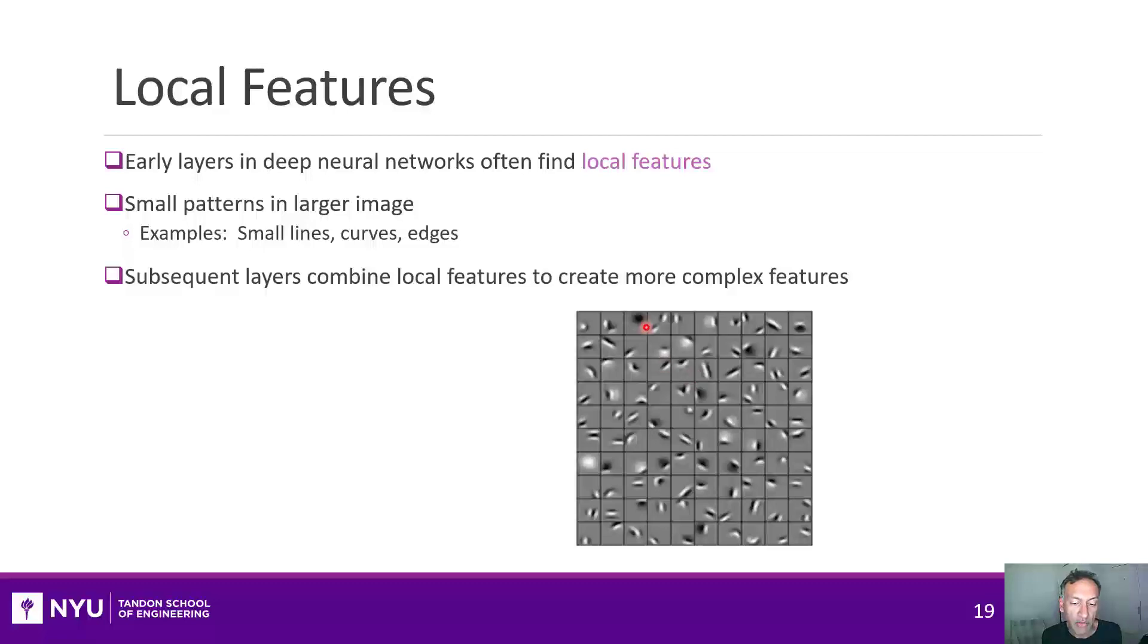What happens because of feature hierarchy is that the subsequent layers will then combine these local features to extract more complex features and eventually some kind of higher level semantic information. The point is that these kind of local features can really be anywhere in the image, and what that first convolutional layer is trying to do is locate them. The question then is how does it do that?